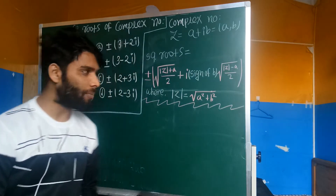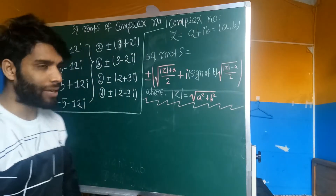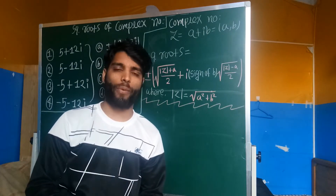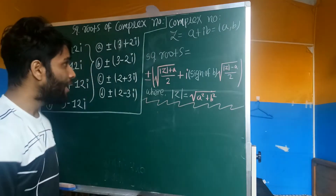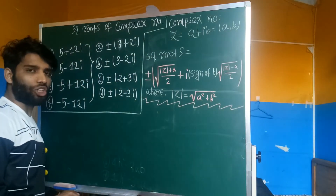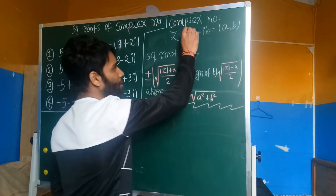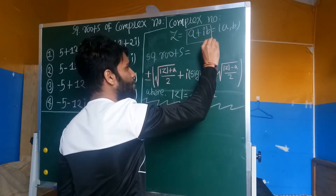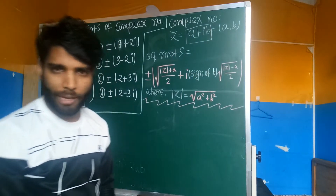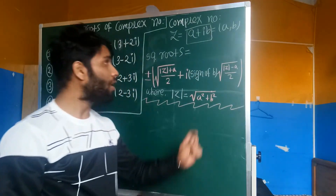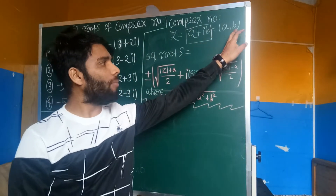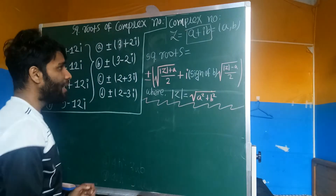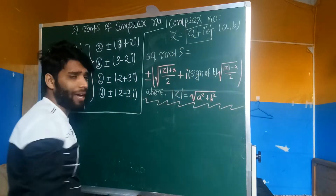Today I am going to talk about complex numbers, specifically the square root of a complex number. I am going to talk about a short code formula for the square root of a plus ib.